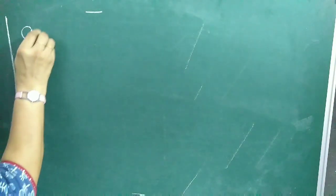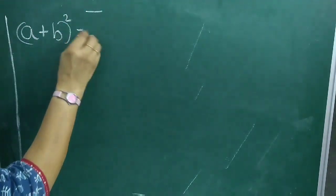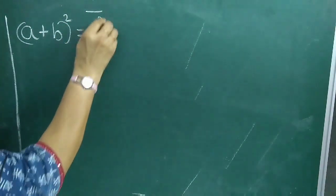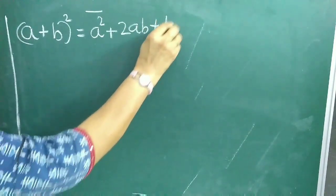Now we are going to prove the algebraic identity mathematically. This video is followed by 9 more videos which you should watch regularly. Subscribe to my channel and press the bell button for getting notifications. So we know the first identity is (a + b)² = a² + 2ab + b².